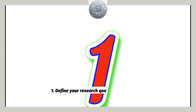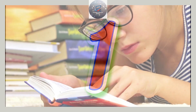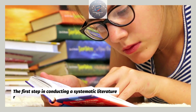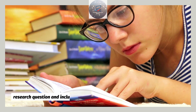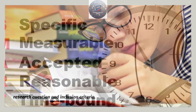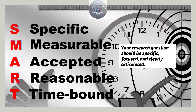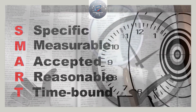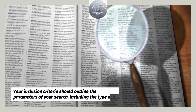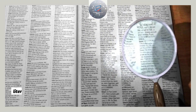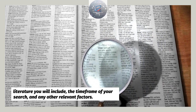1. Define your research question and inclusion criteria. The first step in conducting a systematic literature review is to define your research question and inclusion criteria. Your research question should be specific, focused, and clearly articulated. Your inclusion criteria should outline the parameters of your search, including the type of literature you will include, the time frame of your search, and any other relevant factors.